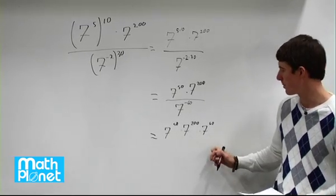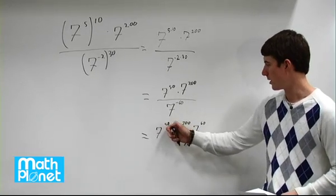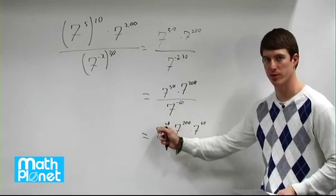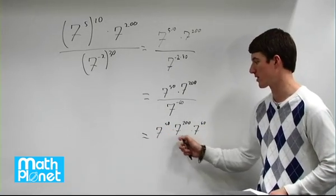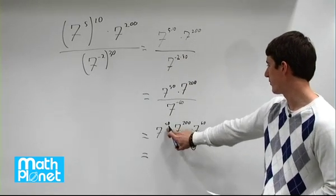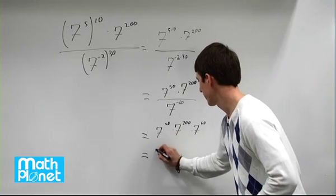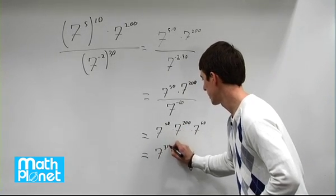It's about as simple as we can get it, but now we have the same base, three different exponents, three different indices here. We can just add those straight across. This is one of the rules of powers: if you multiply by the same base, add the powers. So we just have 50 plus 200 plus 60, that's 110 plus 200, so 7 to the power of 310.